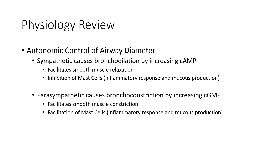Just a little review — we covered this in pulmonary physiology. The autonomic control of airway diameters: the sympathetic nervous system causes bronchodilation by increasing cyclic AMP, which facilitates smooth muscle relaxation and inhibition of the mast cells. Remember, the mast cells are the drivers for the immune response — they lead to more secretions and airway inflammation. If we inhibit them, we'll have less inflammation and less mucus production.